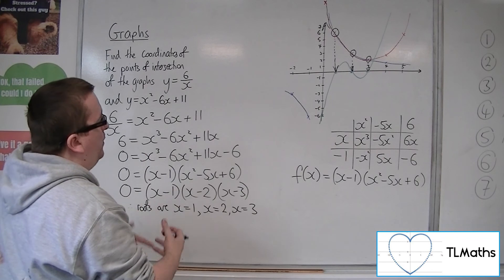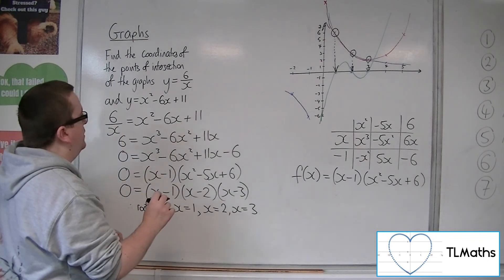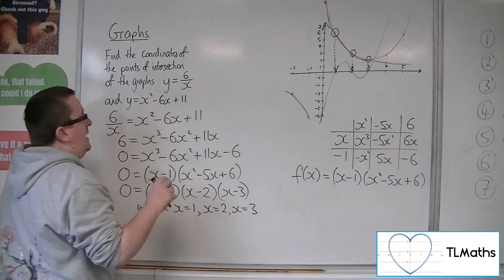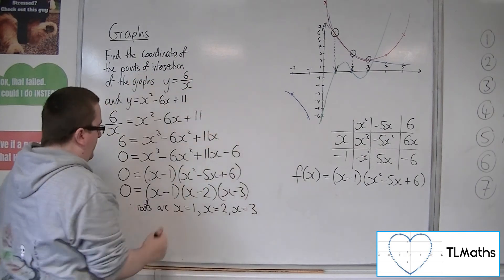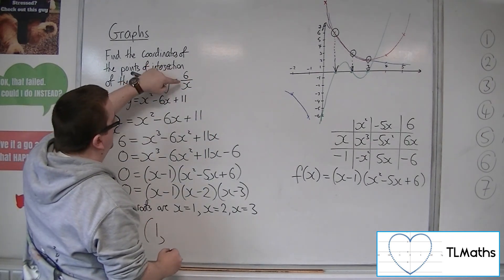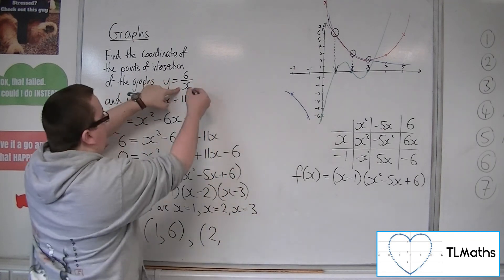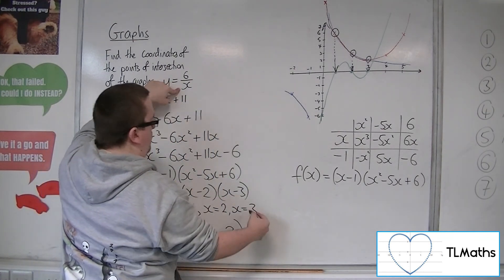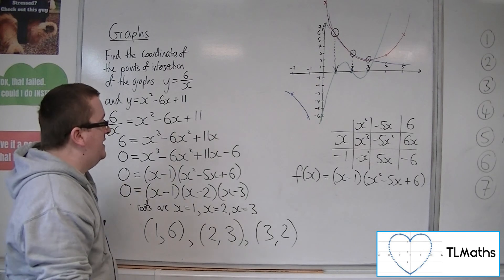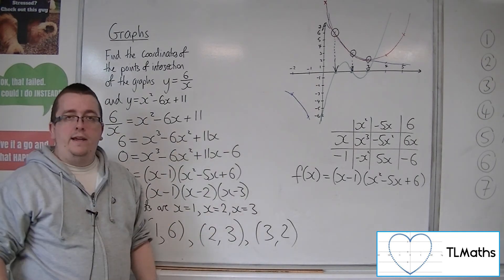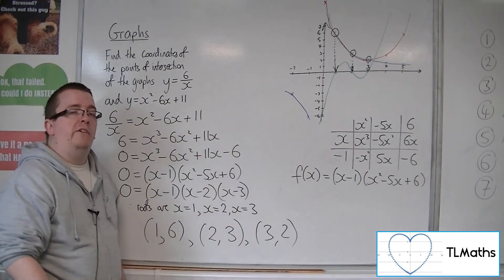So because we then have the x equals 1, x equals 2, and x equals 3, I can find the y-coordinates by substituting each of these three into either this quadratic or this reciprocal graph. So when x is 1, I get 6 over 1, which is 6, we have 6 over 2, which is 3, and when x is 3, we get 6 over 3, which is 2. And these are the three intersection points, that is the algebraic way of going through this, and this is the visual companion that makes sense of what is going on.